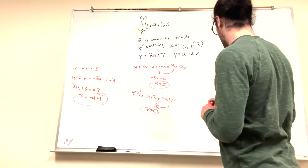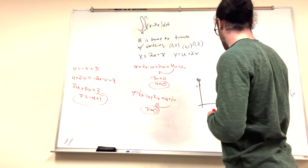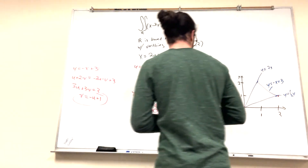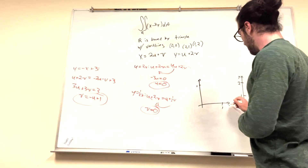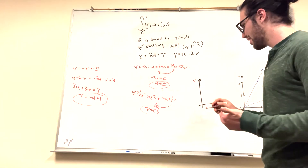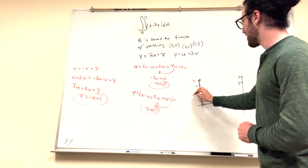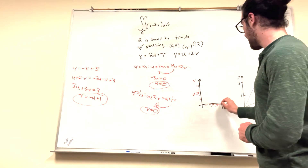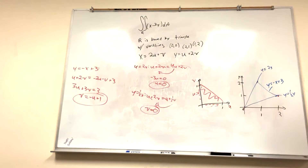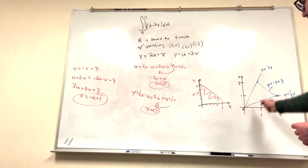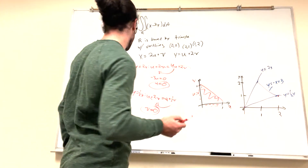Let's draw another graph in uv-space. We have v equals 0 along the u-axis, u equals 0 along the v-axis, and v equals negative u plus 1 as a diagonal line. So now we have a region — it's a triangle, and it's much simpler than the original. Comparing the two regions: the original is a triangle but not easy to integrate directly; the uv region is a clean triangle. I'm going to integrate in the direction of v.